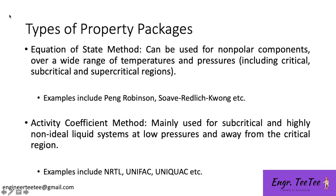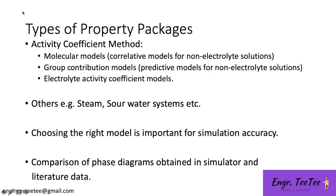The second main type is the activity coefficient method, which is mainly used for subcritical and highly non-ideal liquid systems at low pressures and away from the critical region. Examples include NRTL (Non-Random Two Liquid), UNIFAC, and UNIQUAC. Under the activity coefficient method we have three sub-types: molecular models, group contribution models, and electrolyte activity coefficient models. For non-electrolyte solutions, we can have correlative or predictive models — those are the molecular and group contribution models respectively.